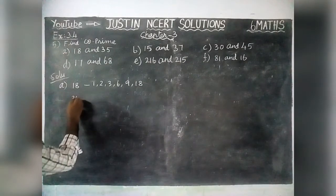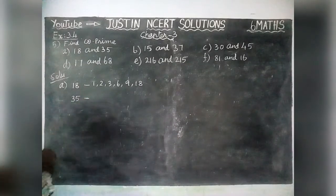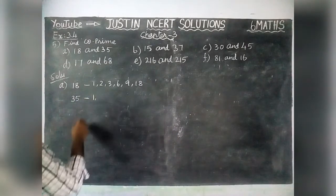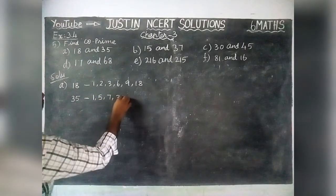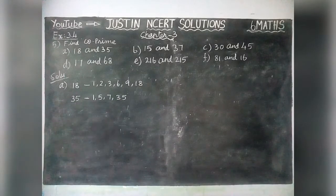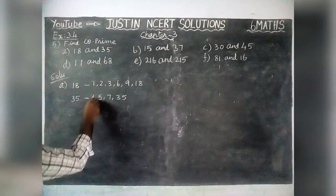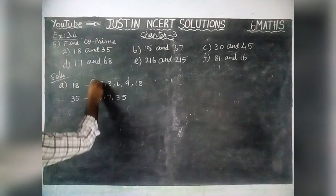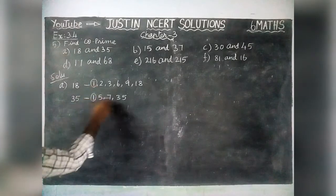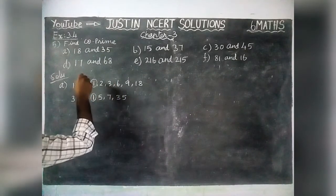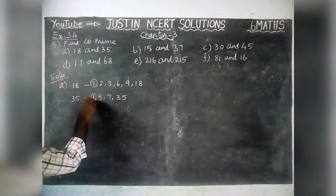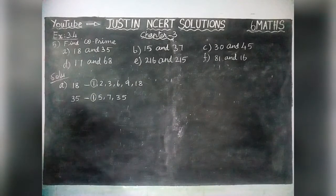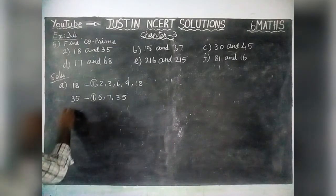Next, 35. We have to find all the factors of 35: 1, 5, 7, and 35. Except 1, we don't have any other common factor. According to the co-prime statement, if two numbers have only one as a common factor, it is called co-prime numbers. Therefore, 18 and 35 are co-prime numbers.